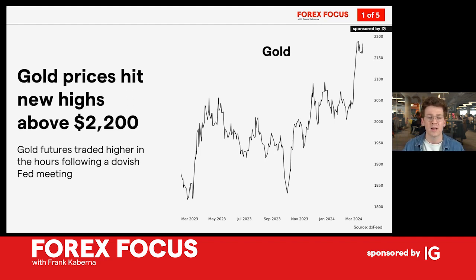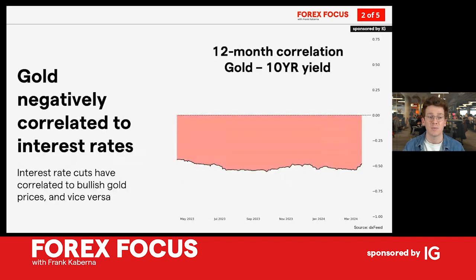We were wondering when that next big move — either to the upside or downside — might come. We had a relatively dovish Fed and a relatively dovish Bank of England, and that caused an intraday spike in gold prices, especially in the hours following the Fed meeting, with gold prices north of $2200. It makes sense when you throw in these correlations.